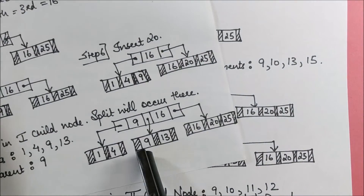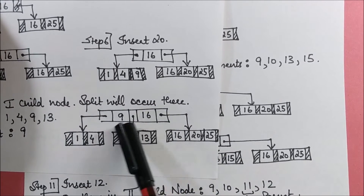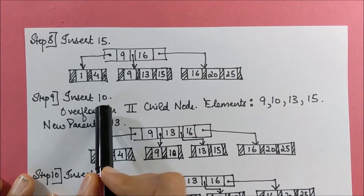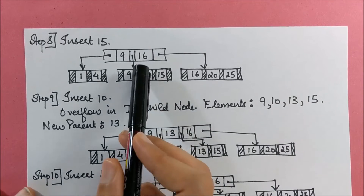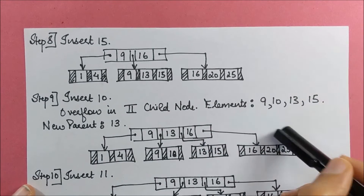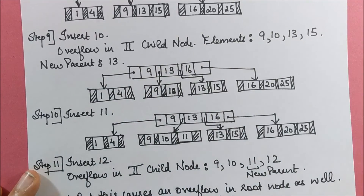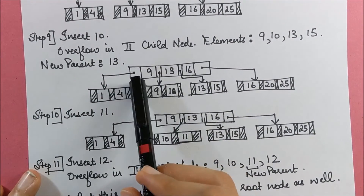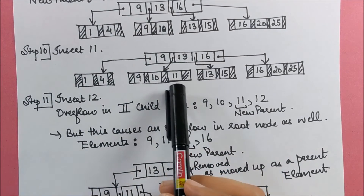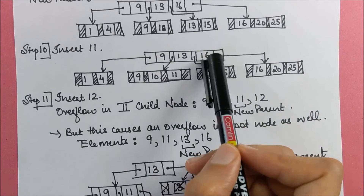Insert 15: comparing at the root, 15 is more than 9 but less than 16, so it goes into the middle node with 9 and 13. It is inserted directly there. Next, insert 10: it is also more than 9 but less than 16, so it goes into the same node — but overflow occurs. The node splits; 13 becomes the 3rd element (middle element) and is promoted as a new parent. Then insert 11: 11 is between 9 and 13, so it is inserted directly into that node.